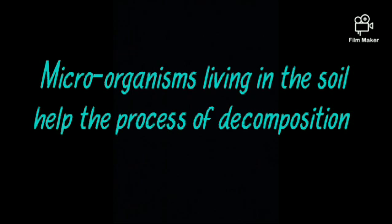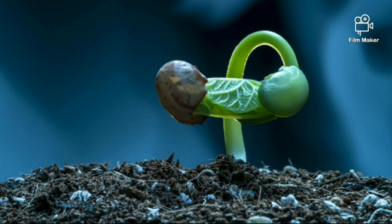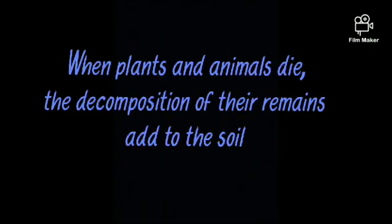Micro-organisms living in the soil help the process of decomposition of plant residue, dead animals and insects. As a result, substances that help the growth of plants are formed and added to the soil. Plants use substances in the soil for their growth, and when plants and animals die, the decomposition of their remains returns those substances to the soil.